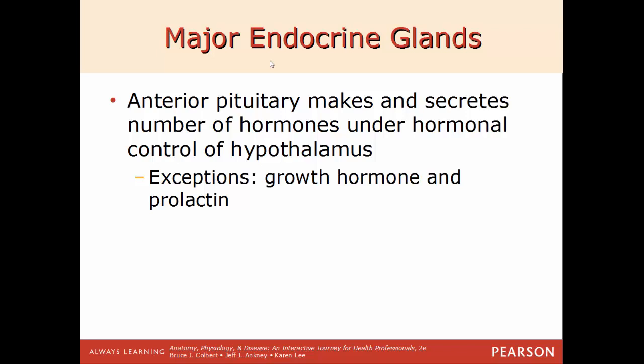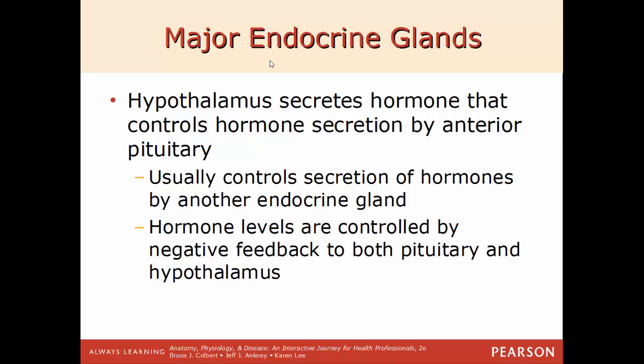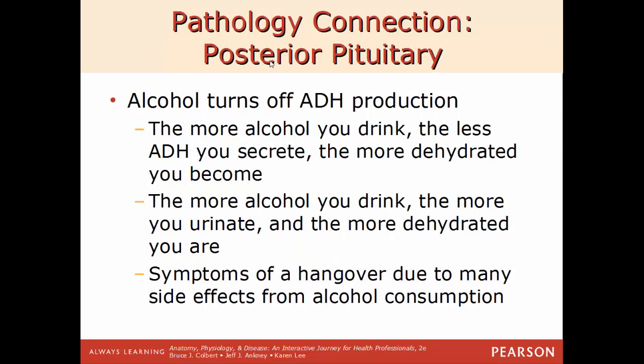The anterior lobe makes and secretes a large number of hormones under hormonal control of the hypothalamus — such as growth hormone, prolactin, FSH, LH, and others. The hypothalamus secretes hormones that control hormone secretions by the anterior pituitary, and these hormone levels are controlled by negative feedback to both the pituitary and the hypothalamus. Because the anterior lobe synthesizes and secretes so many different types of hormones, negative feedback is the best way to regulate this control.